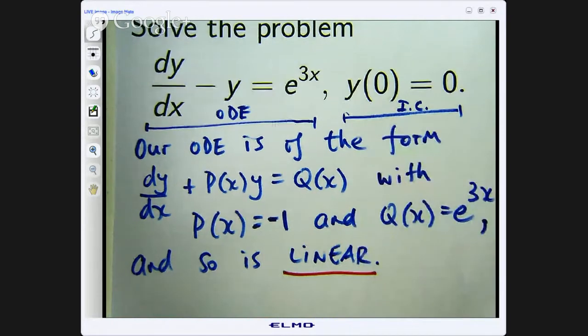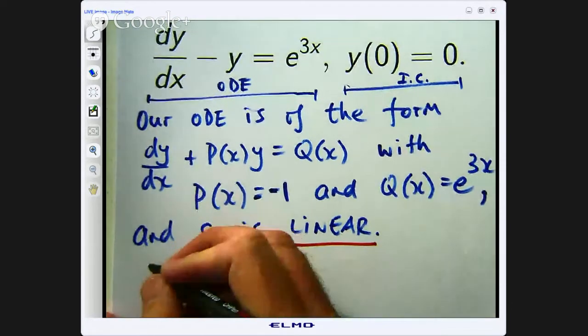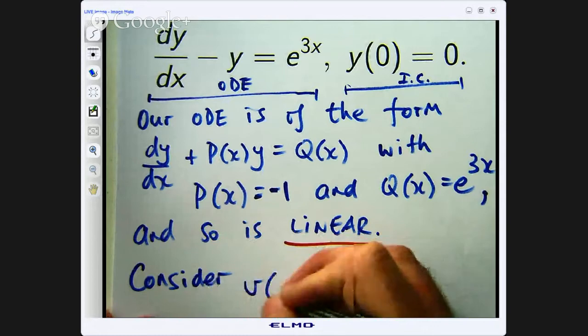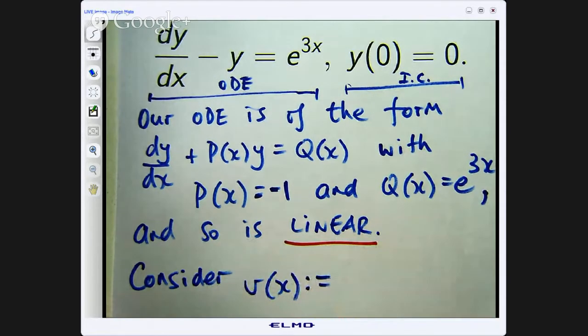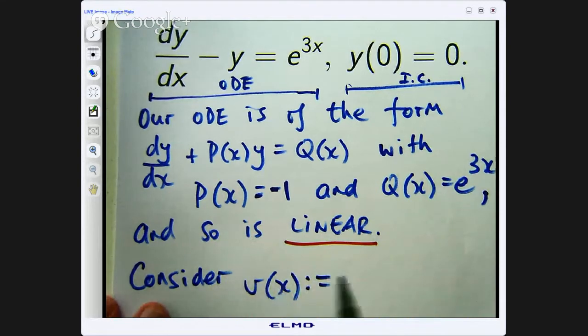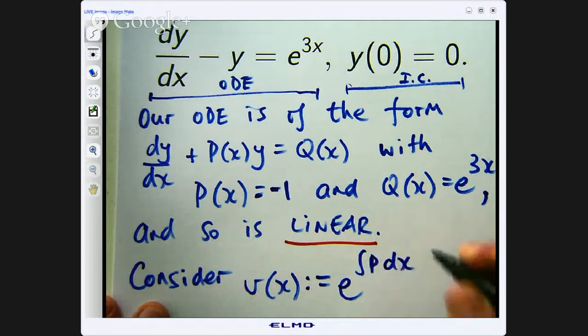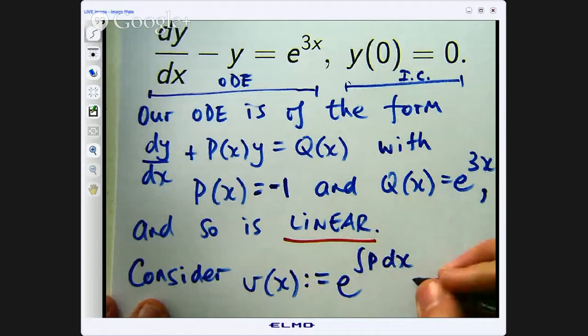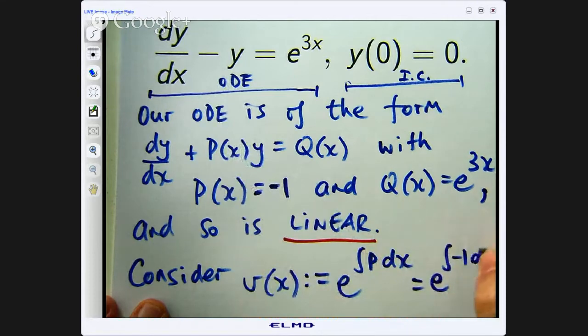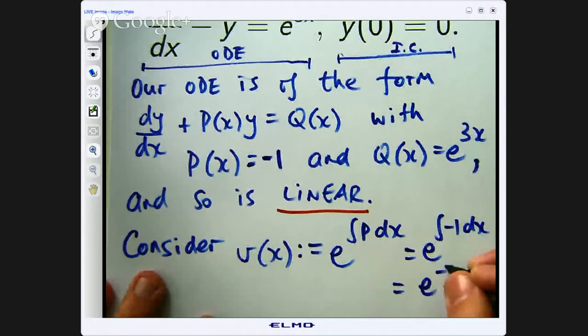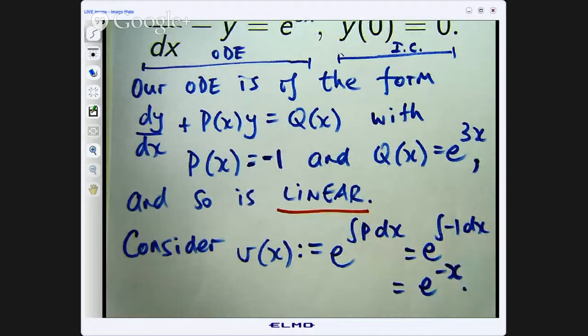So let us consider the following. I am going to introduce a function v which is going to be this magic function, the integrating factor. And it is going to be e to the integral p dx. So our p of x coefficient is negative 1. So if I integrate this I will get e to the negative x. Now I do not need a constant of integration there.